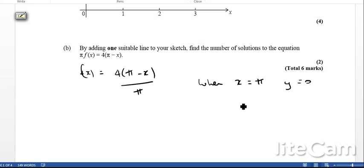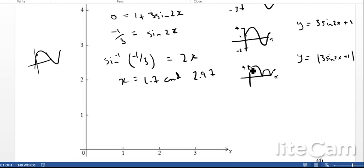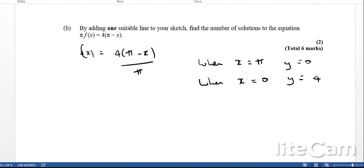Well, I can plot this quite easily. I know that when x = π, then this is going to equal 0, so y = 0, so that's one point on my straight line, and when x = 0, I'm going to end up with y = 4. Okay, so there we go, that gives me the straight line that I can plot. If I do plot that through the graph that I've drawn here, I will actually find that there are five solutions.